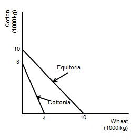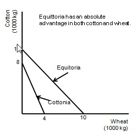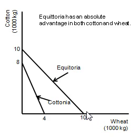One of these countries, Equatoria, has an absolute advantage in both cotton and wheat. If Equatoria directs all of its land, labor, and capital into the production of cotton, it can produce more cotton — 10,000 kilograms — and that is more than the 8,000 kilograms that Catonia can produce. If both countries directed all of their land, labor, and capital into the production of wheat, Equatoria again can produce more wheat than Catonia.